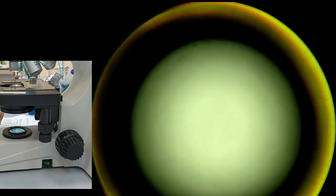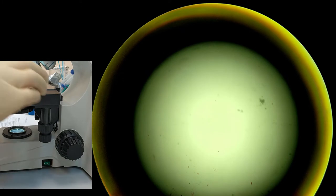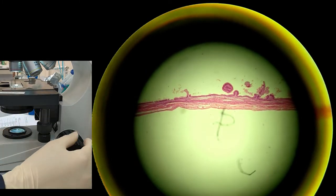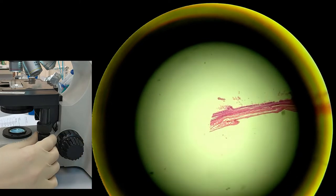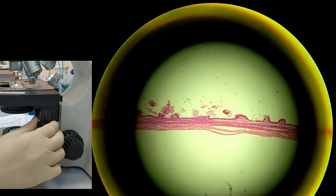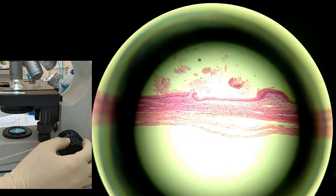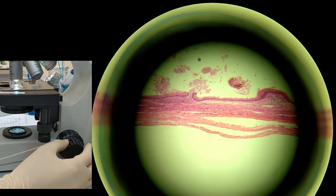Switch to 4x again and take the third slide, which is simple columnar epithelium. Here you can see it with no much details. This is epithelial tissue that makes up the columns. Switch to 10x, then switch to 40x.